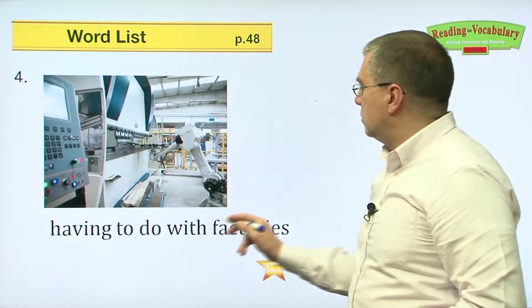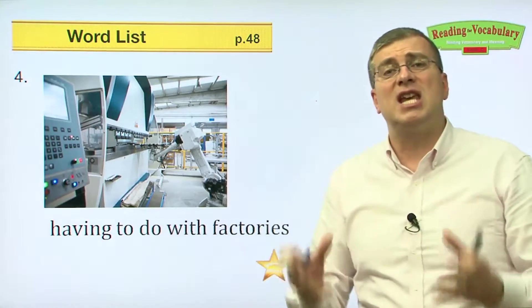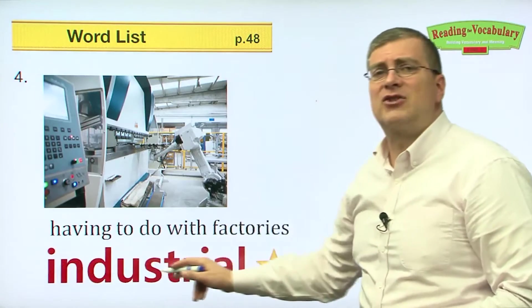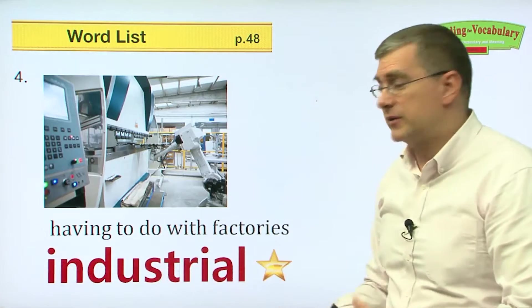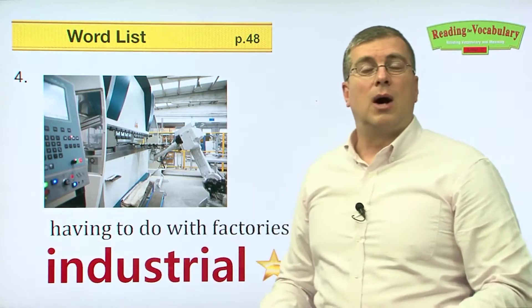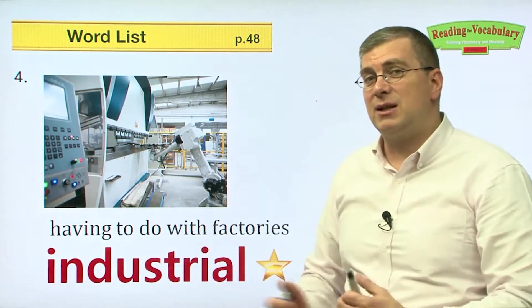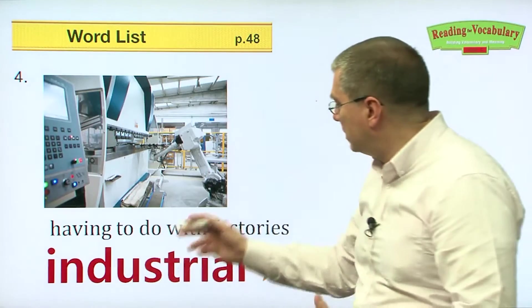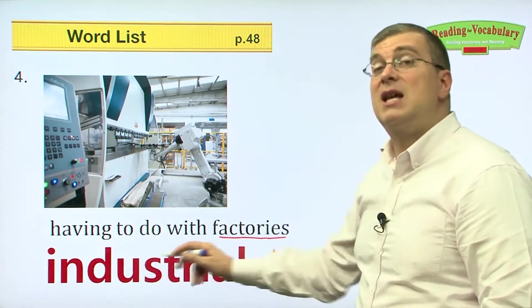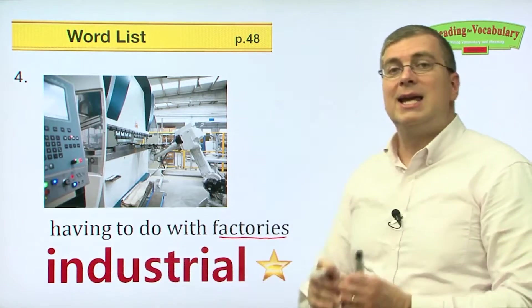Number four. Having to do with factories. When we talk about factories and factories that are making things and machines, the process of manufacturing, we're usually talking about industrial topics or industrial things. Industrial is an adjective having to do with factories. This job is an industrial job. This business deal is an industrial business deal having to do with factories. Industrial.